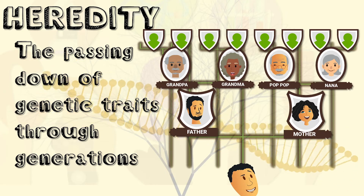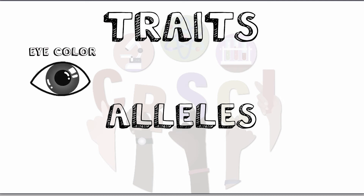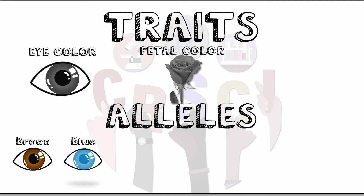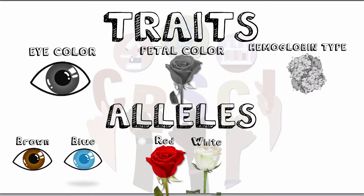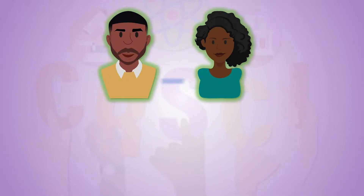Every trait has multiple alleles. An allele is a version of a trait. For example, for eye color you could have the allele for brown or blue eyes; for petal color in roses they could have alleles for red or white; and for hemoglobin type you could have alleles for alpha or beta hemoglobin.